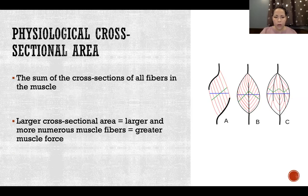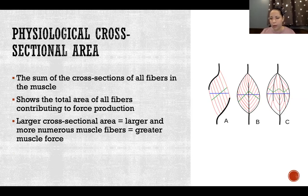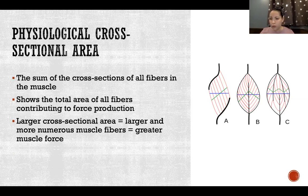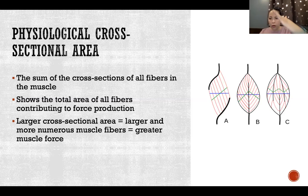Physiological cross-sectional area — shown by the green lines in the picture — is the sum of the cross-sections of all fibers in the muscle. For PCSA we're looking at function rather than anatomy, trying to capture the function of the muscle. We take a cross-section of all fibers in the muscle, so depending on the design and orientation of the fibers, the physiological cross-sectional area will look different.